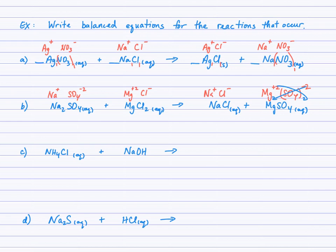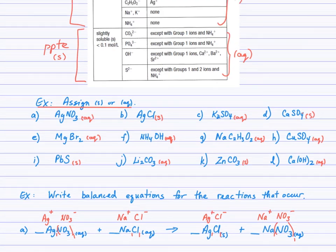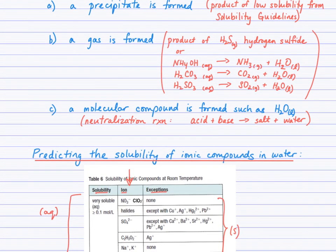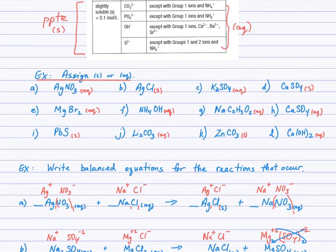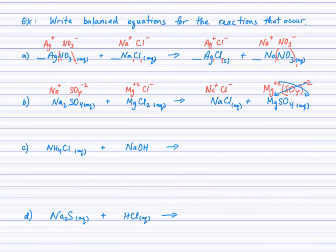In example A, we formed a precipitate of silver chloride plus an aqueous solution, so a reaction occurs. In example B, we have an aqueous product and an aqueous product — no precipitate is formed. We ask: is a gas being produced? A gas could only form if ammonium hydroxide, carbonic acid, or sulfurous acid appear as products, because those rapidly decompose to produce a gas plus water. NaCl and MgSO4 do not decompose to produce gases, so we say no reaction.